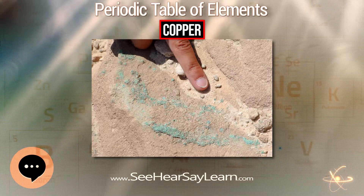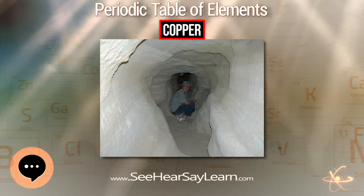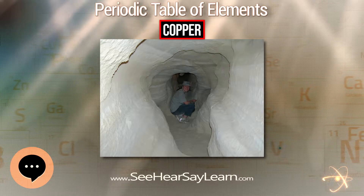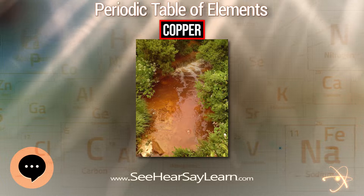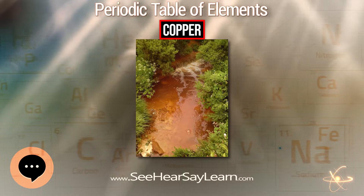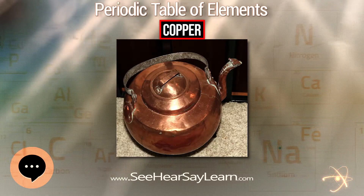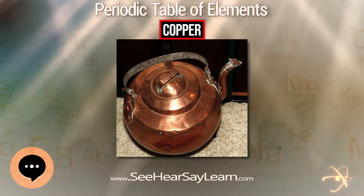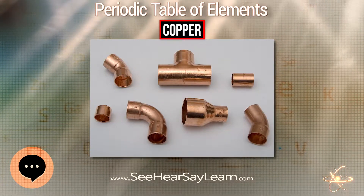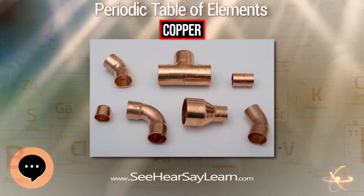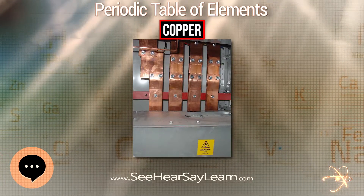The commonly encountered compounds are copper salts, which often impart blue or green colors to such minerals as azurite, malachite, and turquoise, and have been used widely and historically as pigments. Copper used in buildings, usually for roofing, oxidizes to form a green verdigris.